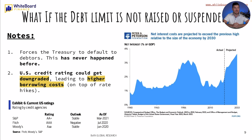This chart goes from 1940 all the way to the projected date of 2033. You can see right around 2030 — that is when they're going to exceed the previous high relative to the size of the economy.